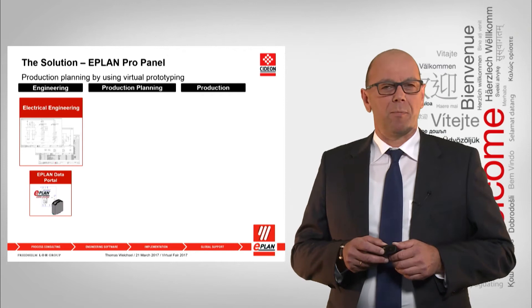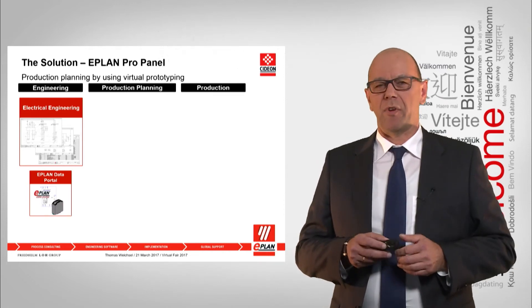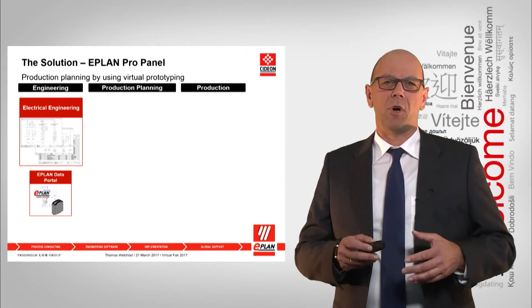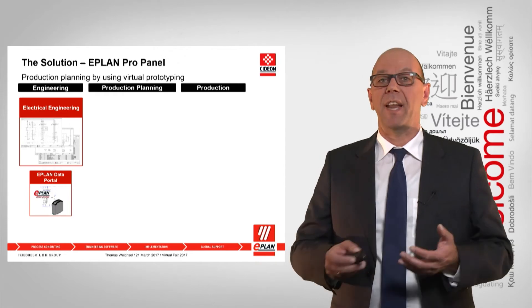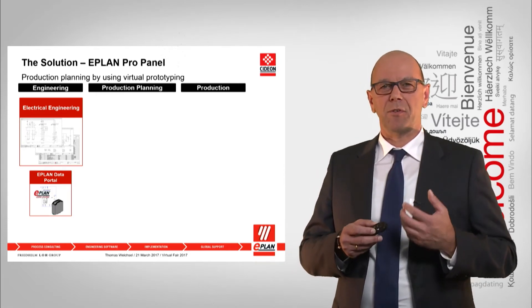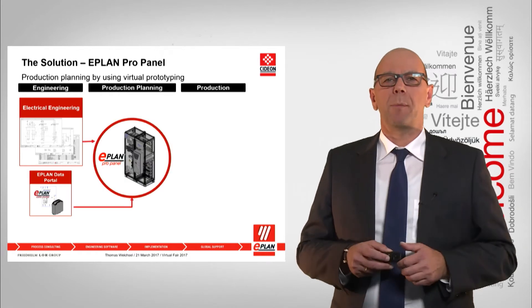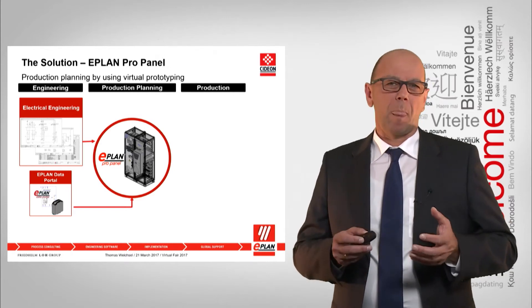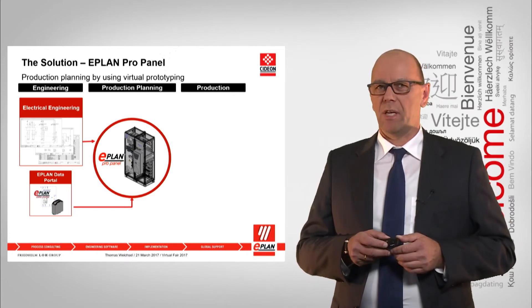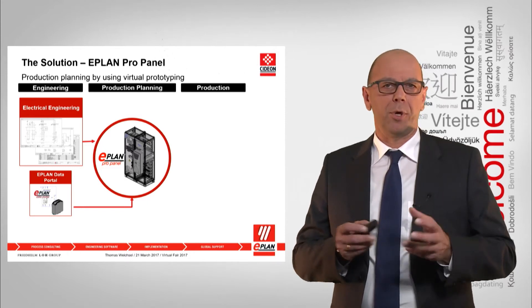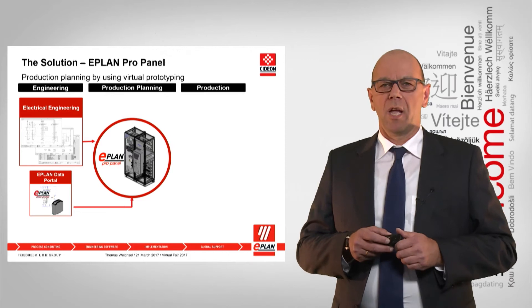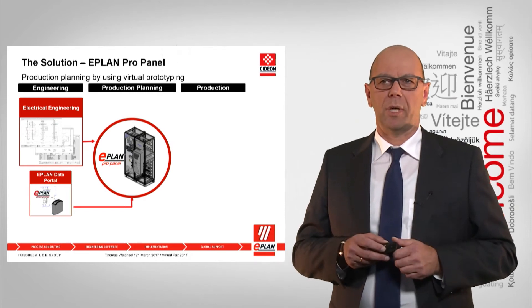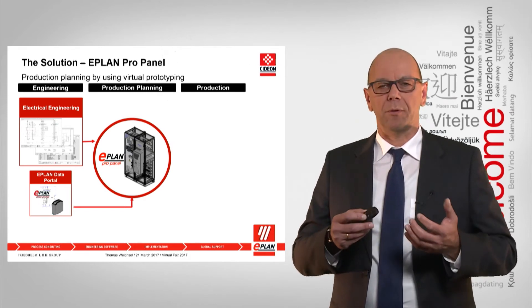That means we set up the product on the PC before we start producing it. We take data from electrical engineering — for example, a schematic from ePLAN Electric P8, or device lists and connection lists in Excel format — and in combination with data from the data portal, we use ePLAN ProPanel to set up a virtual prototype. It sounds difficult, but don't worry — it's very easy, just like using Lego blocks. The system supports you, and in a short time you can set up a virtual product description of your control cabinet.